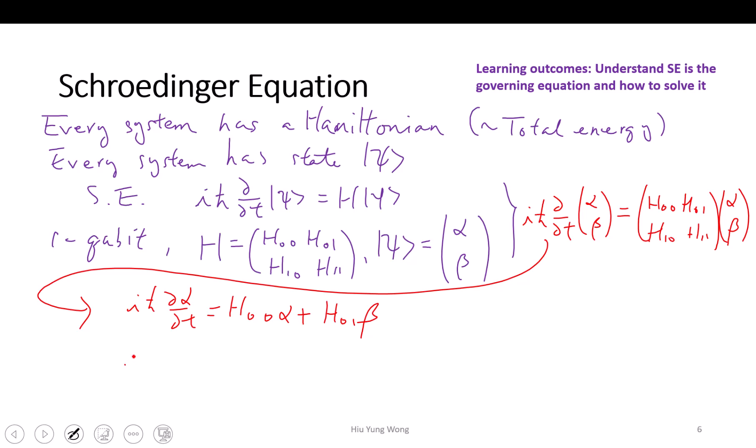The second row is i h-bar partial beta partial t equals to H_1,0 alpha plus H_1,1 beta. A system of linear equation.